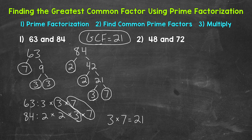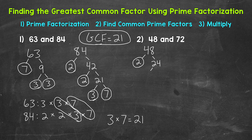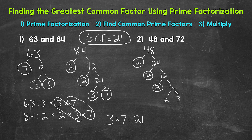Let's move on to number 2 where we have 48 and 72. Let's start with the prime factorization of 48, beginning with the factors of 2 and 24. 2 times 24 equals 48. 2 is prime, so we are done there. 24 we can break down: 2 times 12 equals 24. 2 is prime. 12 we can break down: 2 times 6 equals 12. 2 is prime. 6 we can break down: 2 times 3 equals 6. Both 2 and 3 are prime, so we are done. That's the prime factorization of 48.